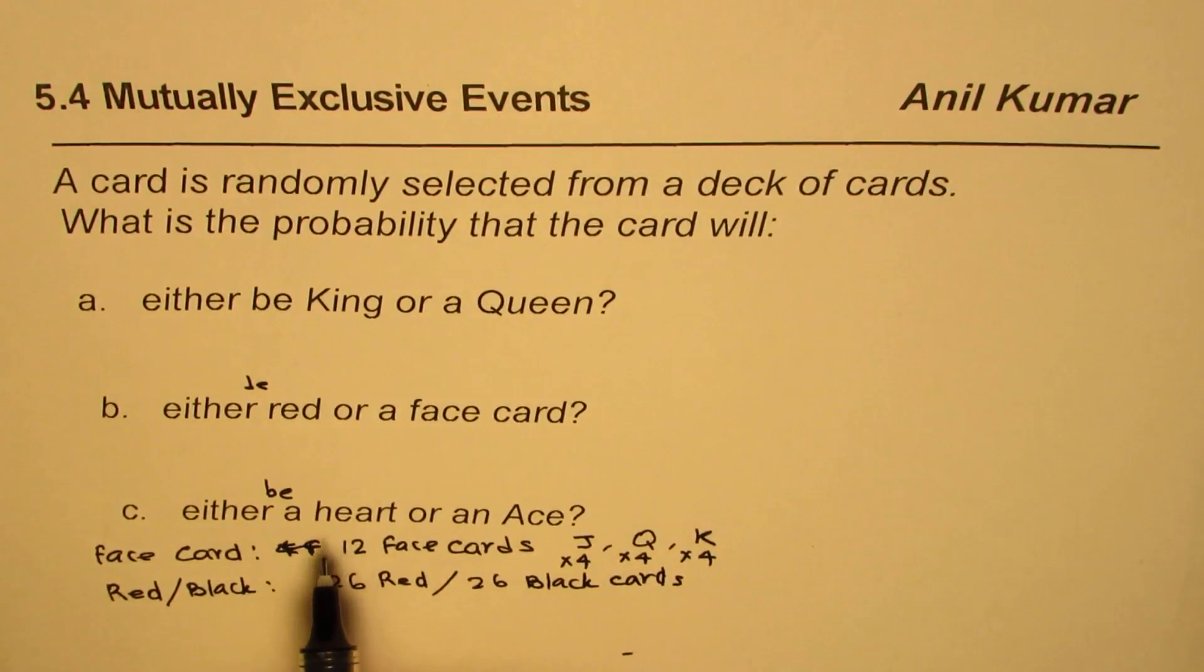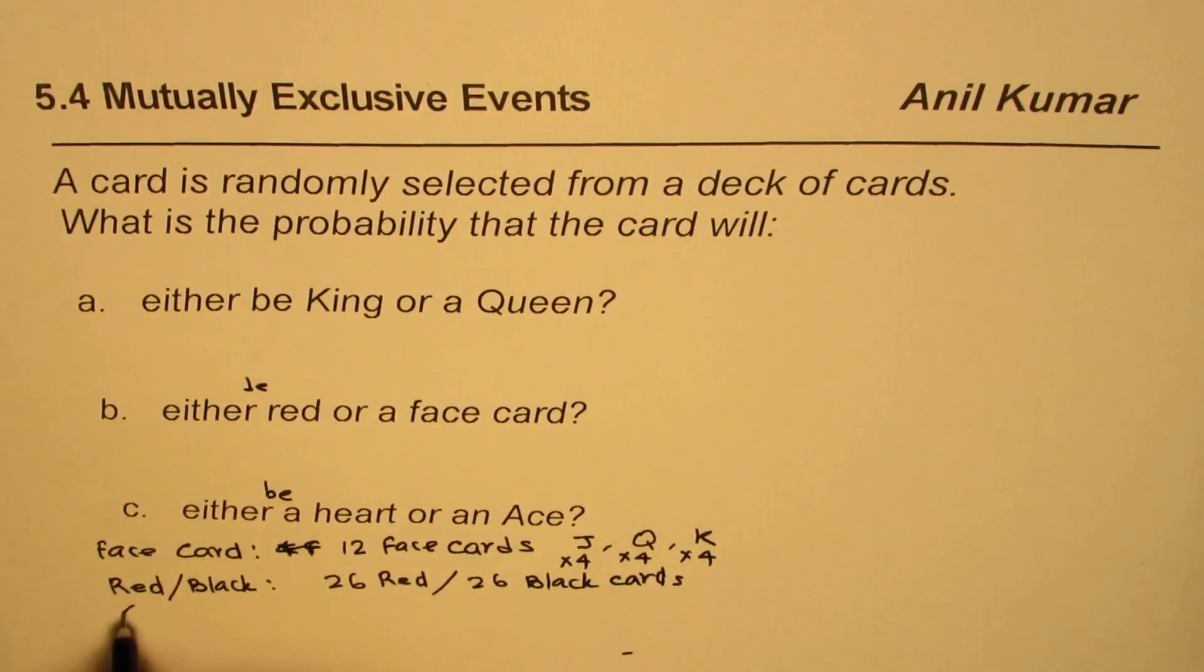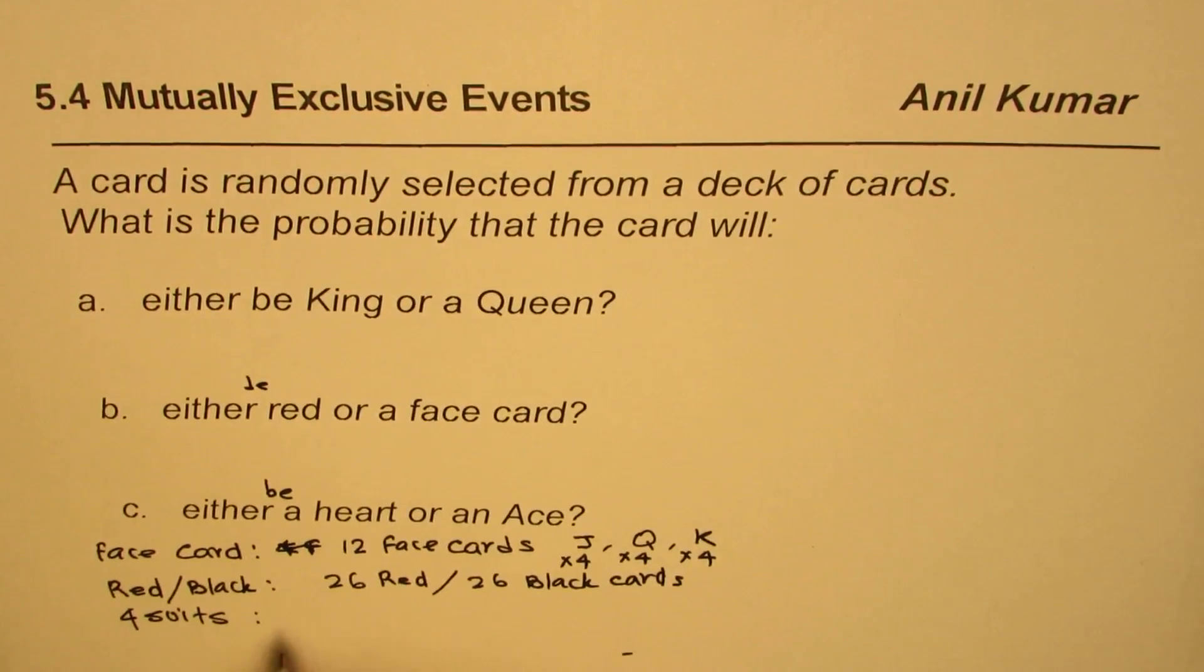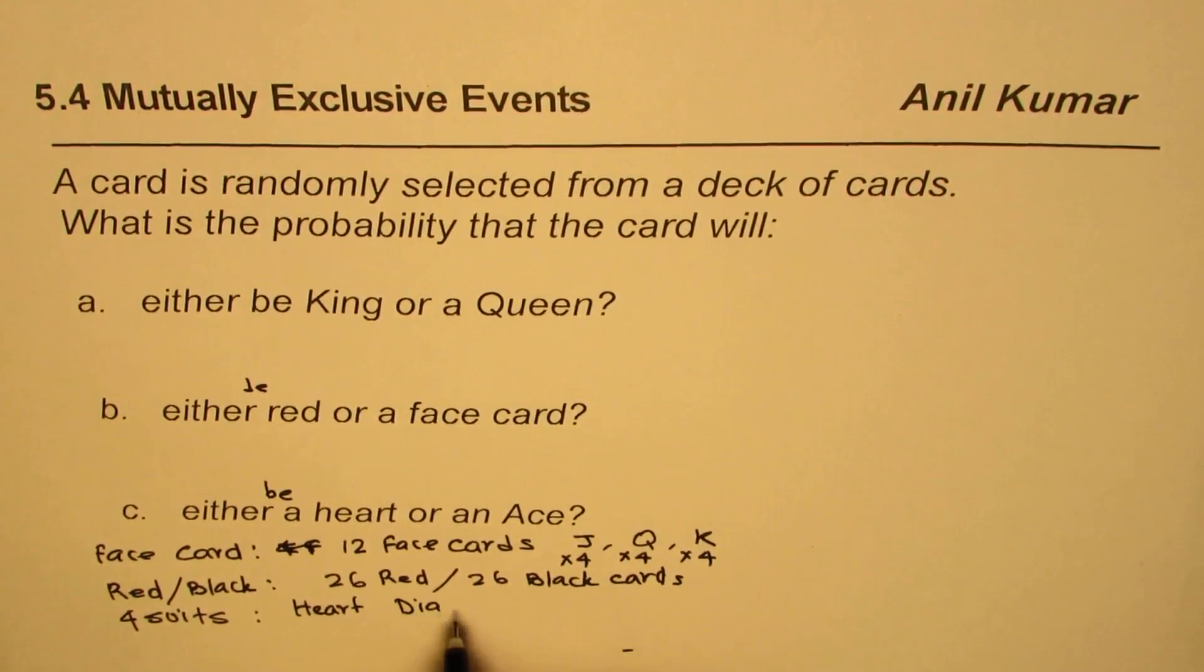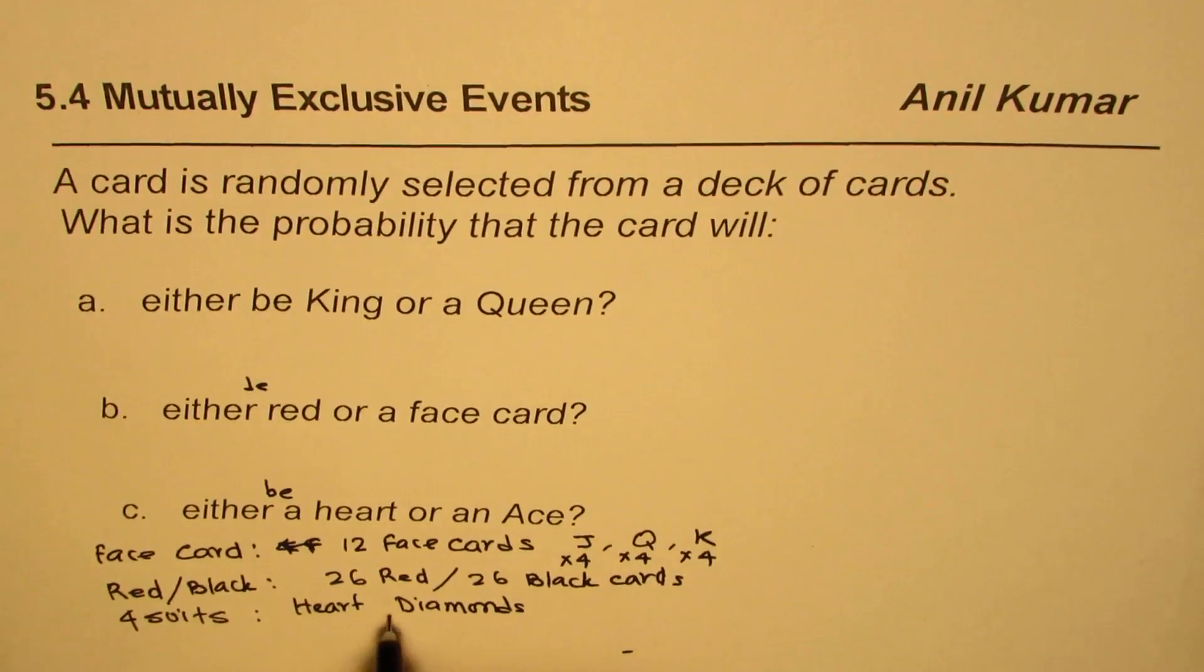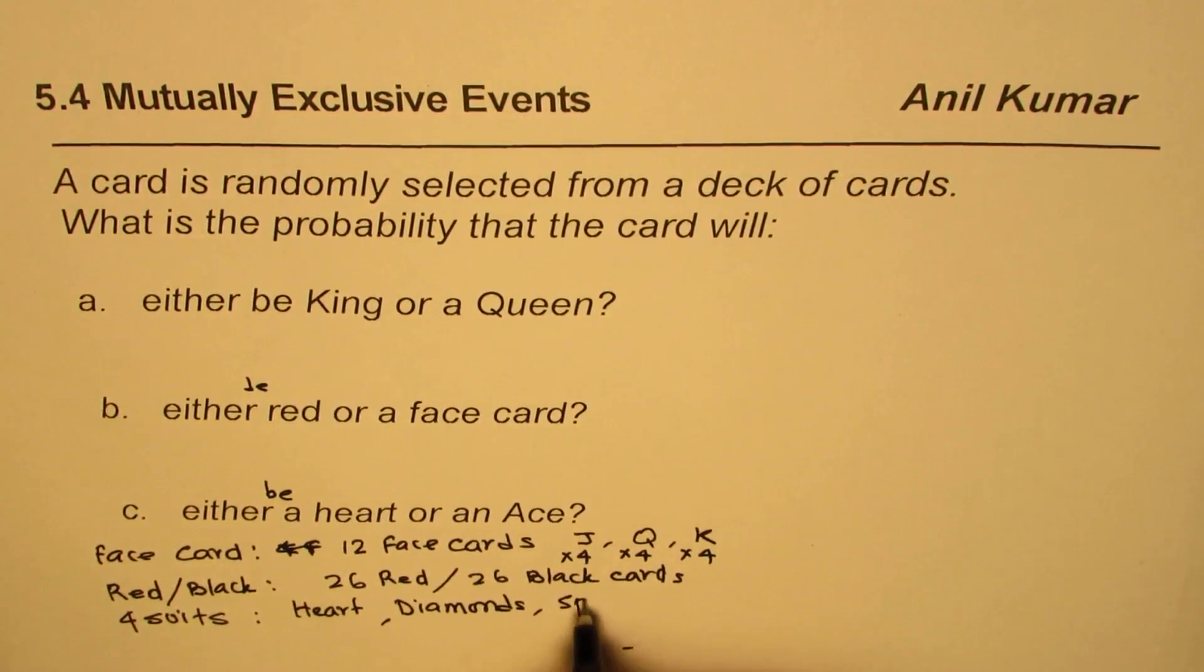We have used the word heart here. These four suits are heart and diamonds, which are red ones, and then we have spades and clubs.